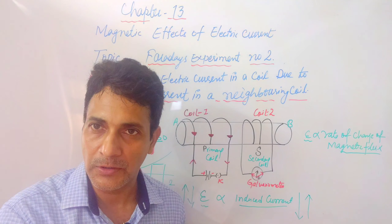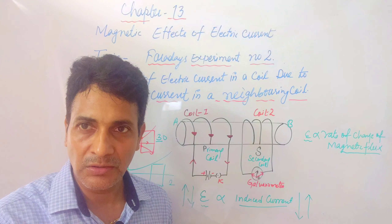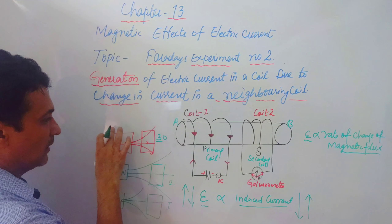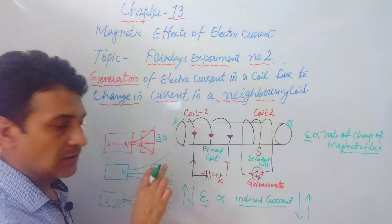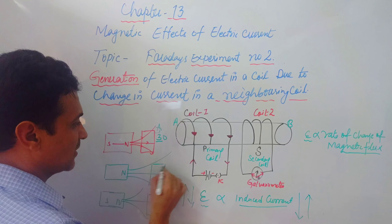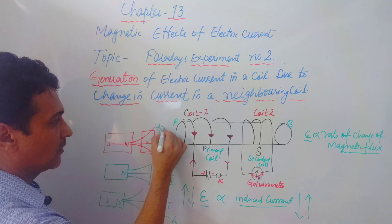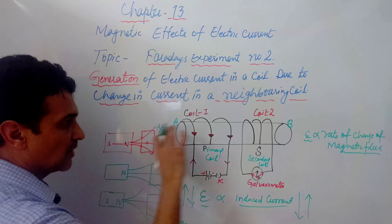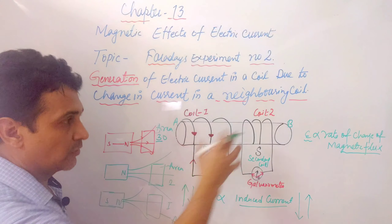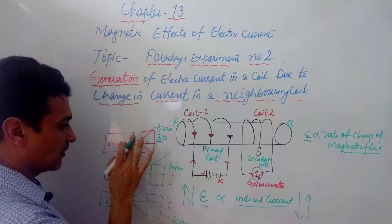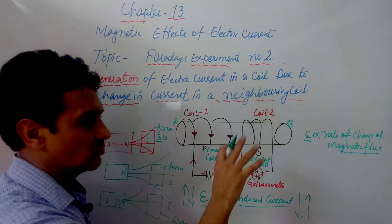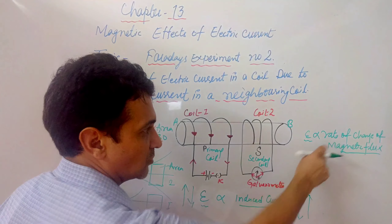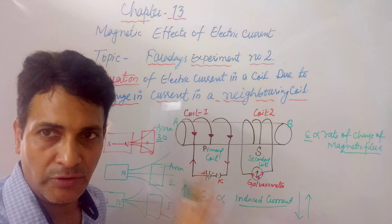For example, the first time 30 magnetic field lines passed through the same area. The rate of change of magnetic flux — meaning the magnetic field lines changed — so you have these two cases to consider.